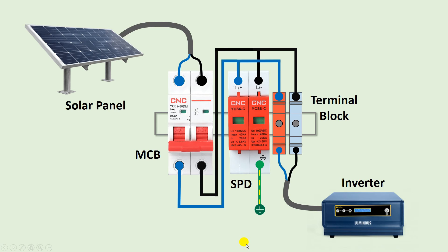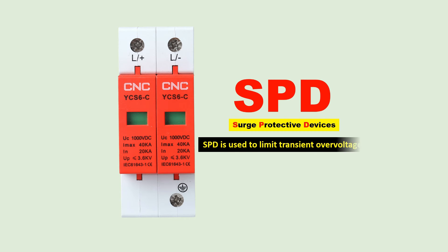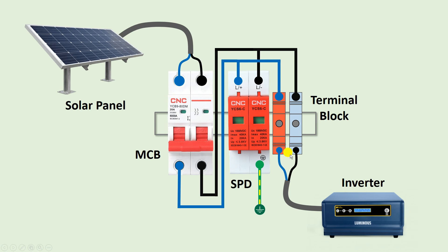Now let us understand why we should use a DC DB. As you know, sometimes suddenly voltage goes high in our homes. If voltage increases rapidly, electrical devices can become faulty. If you want to protect them, you have to use an SPD. In simple words, if the voltage suddenly increases too much, the SPD reduces it — it provides only the voltage required for the inverter. This is why the power supply from the solar panel is connected first with the MCB and then with the SPD. The MCB gives protection from overcurrent and short circuit, and the SPD provides protection from surge voltage.